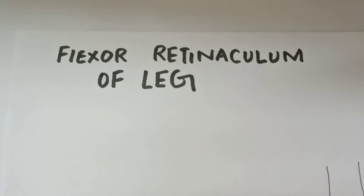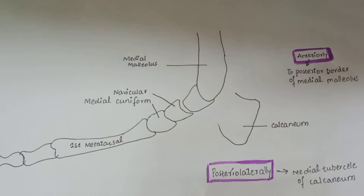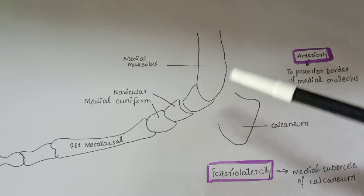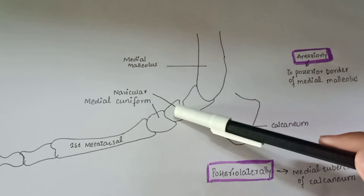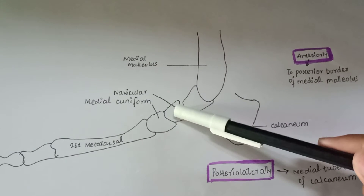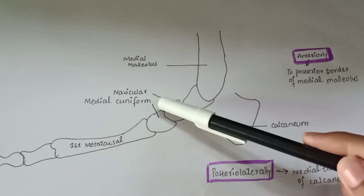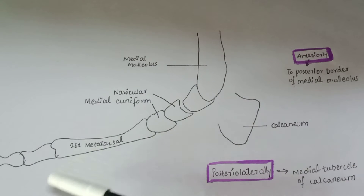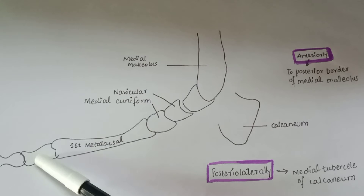Flexor retinaculum of the leg is located on the medial side of the ankle joint. This is the medial aspect of the foot. This is the medial malleolus, this is the navicular, this is the medial cuneiform, and this is the calcaneum. These are the tarsal bones. This is the first metatarsal, this is the proximal phalanx, and this is the distal phalanx.